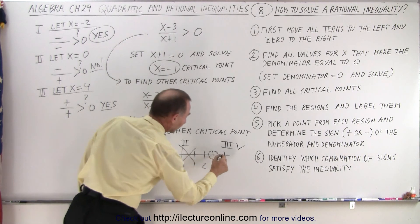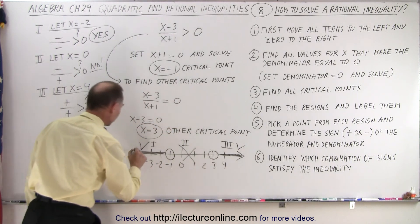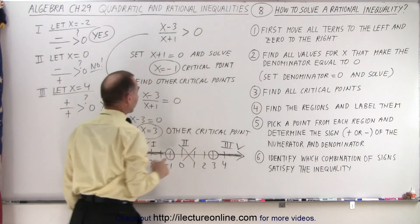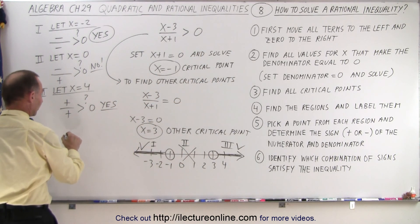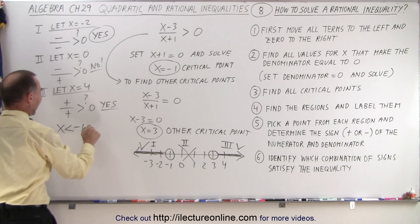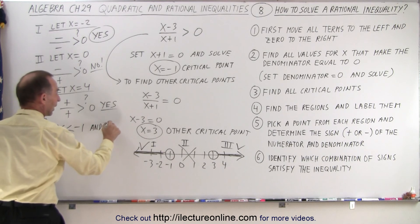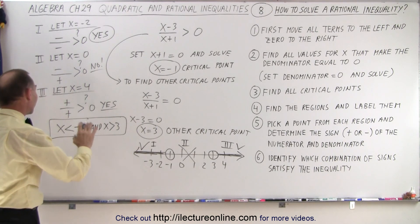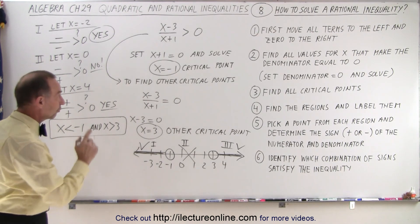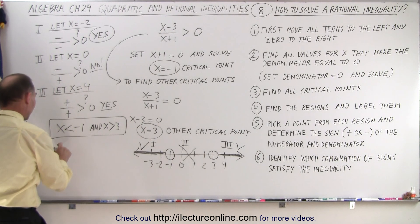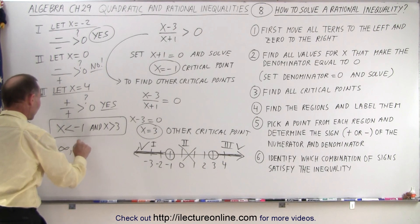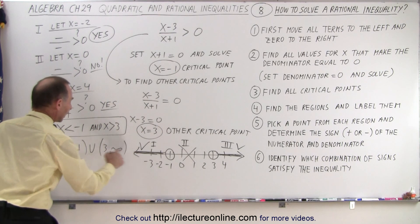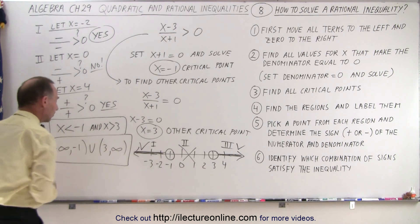So now I'm going to darken the valid regions on the number line. The critical points are not included. The answer is that x must be less than negative one or x greater than three. All values of x greater than three and all values less than negative one are part of the solution. I can also write it in interval notation: negative infinity to negative one, not inclusive, union three to positive infinity, not inclusive.